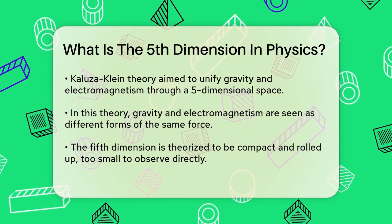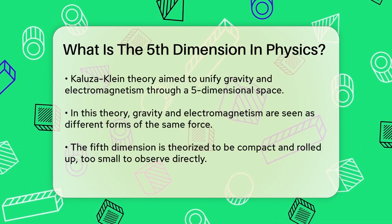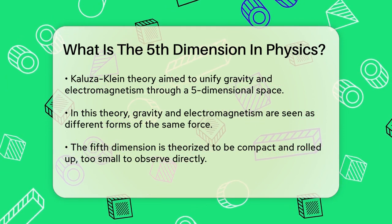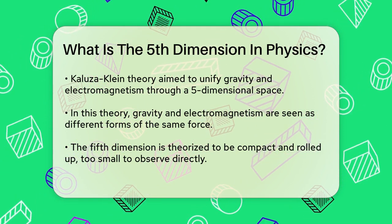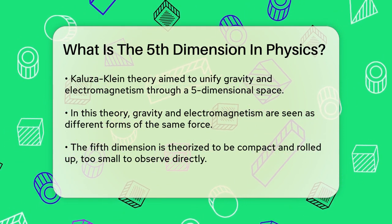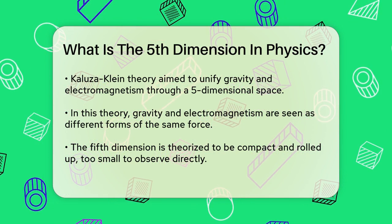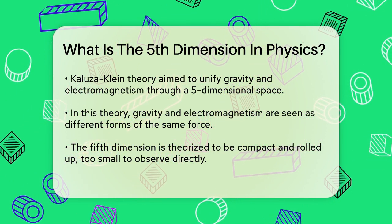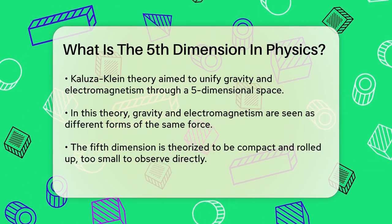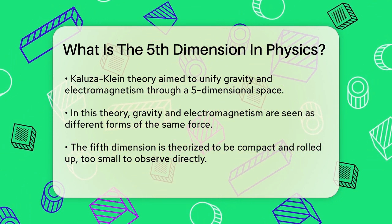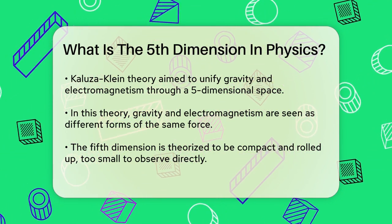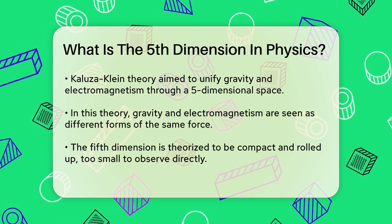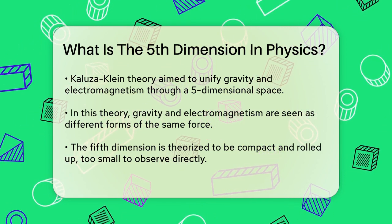In this five-dimensional space, the fifth dimension is not something we can see or directly interact with. According to Klein, this dimension is rolled up into a tiny, compact loop, much too small to be observed directly. This loop is incredibly small—on the order of 10^(-33) centimeters.